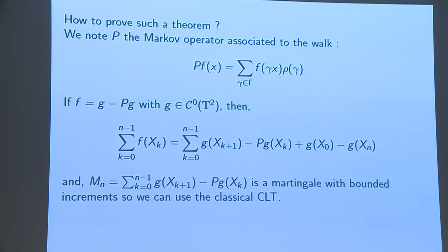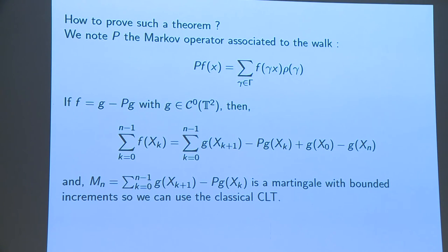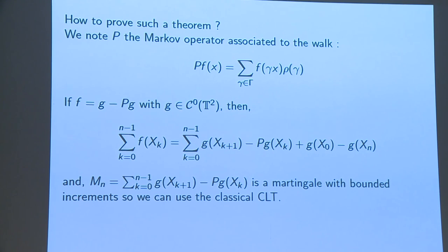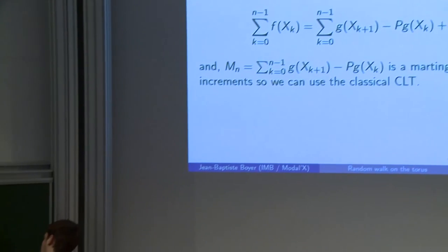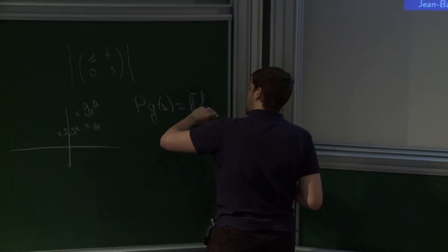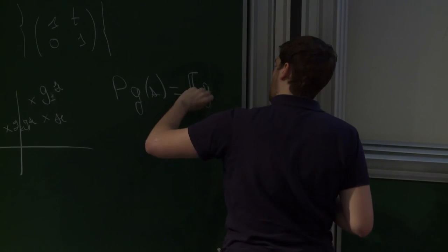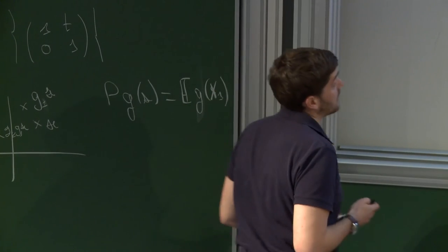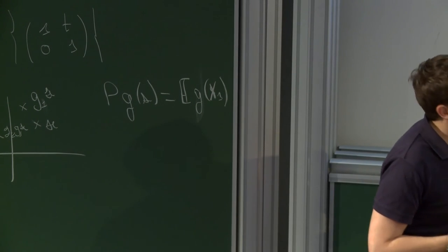So how to prove it? I will not make the proof, but just the idea is to return to martingales and to use central limit theorems for martingales. So if I have a function that writes f equal to g minus pg, where p is the Markov operator. This means that pg of x is the expectation of g of x₁.